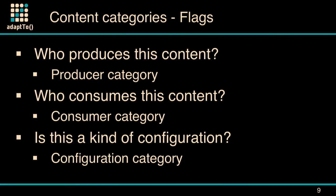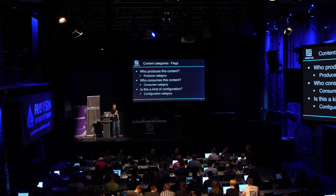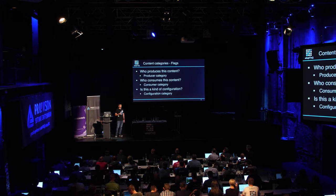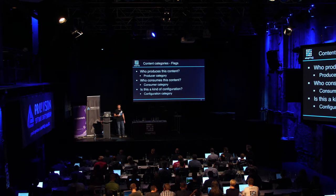We had a long discussion and decided on a set of questions to ask. We ended up with six questions, or flags, or categories. I know these are not the only questions you may ask about content models, but we realized that if we have more than six, it will be very difficult to properly manage this. And if we have too few, there will be aspects we won't consider. So these are the first three.